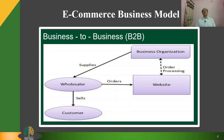Business to Business, in short called B to B: websites following the B to B business model sell products to an intermediate buyer who then sells the product to the final customer. As an example, a wholesaler places an order from a company's website and, after receiving the consignment, sells the end product to the final customer who comes to buy at the wholesaler's retail outlet.